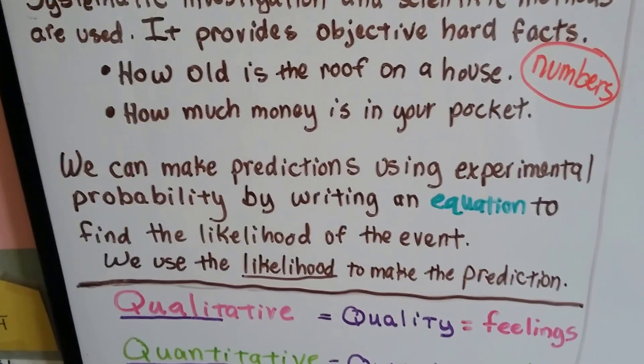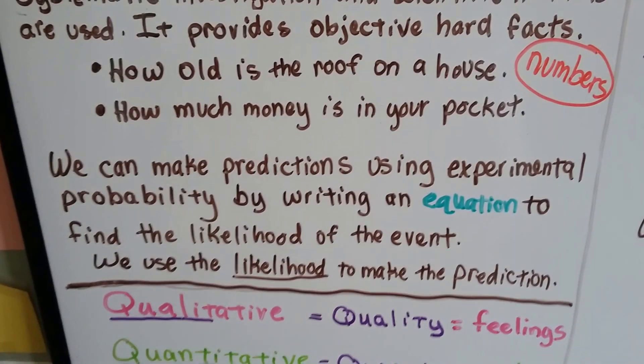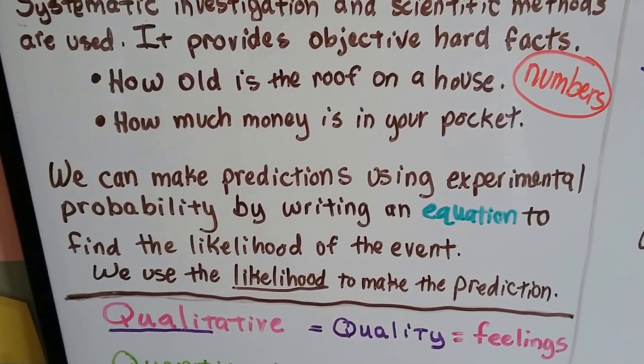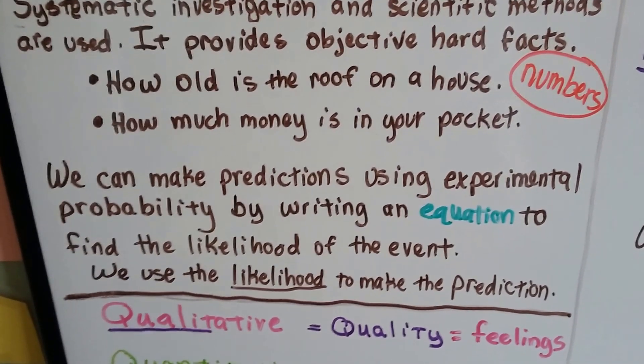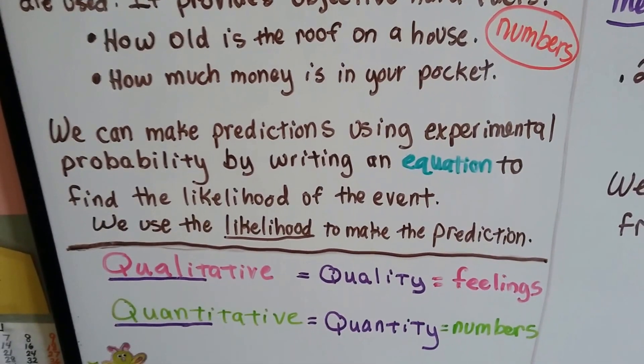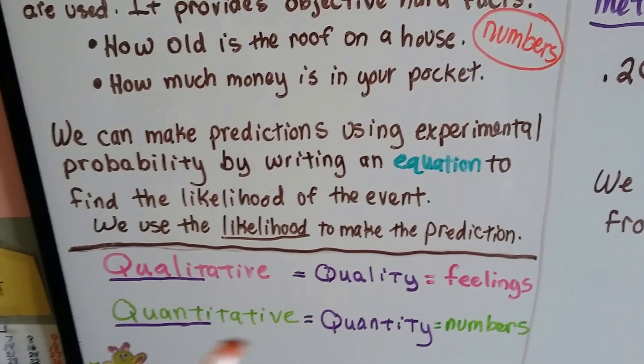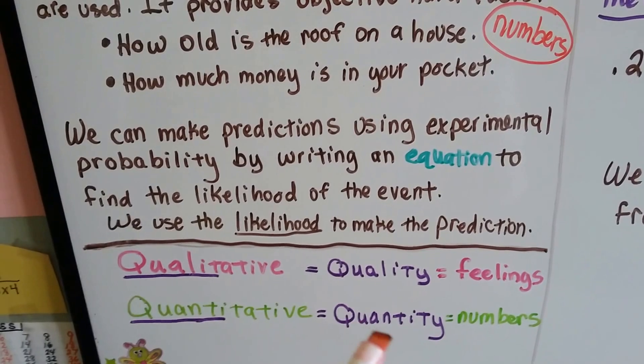So we can make predictions using experimental probability by writing an equation to find the likelihood of an event. We use the likelihood to make the prediction. Remember, qualitative is quality, like feelings, and quantitative is quantity, like numbers.